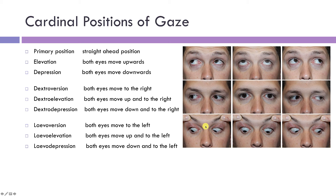When the patient looks right and up we have dextro elevation, and right and down we have dextro depression. The prefix used in all three right-gaze positions is dextro: dextroversion, dextro elevation, dextro depression. Moving to the left, we use the prefix levo: levoversion, levo elevation, and levo depression.